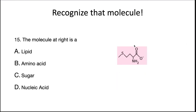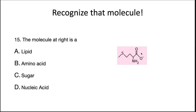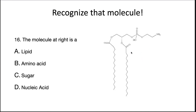The next molecule is an amino acid — look for the nitrogen, carbon, and then COOH. And finally, the last molecule is a lipid. That does it for bacterial structure. Next, we'll talk about archaea and eukarya and their structural differences.